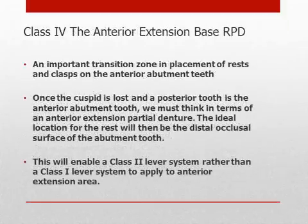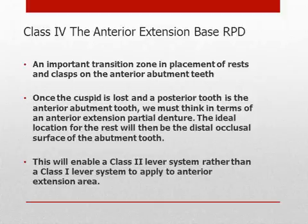An important transition zone in placement of rests and clasps on the anterior abutment teeth may occur. Once the cuspid is lost and a posterior tooth is the anterior abutment, such as a premolar, we must think in terms of an anterior extension partial denture. The ideal location for the rest will then be the distal occlusal surface of the abutment tooth, enabling a Class 2 lever system rather than a Class 1 lever system to apply to the anterior extension area.